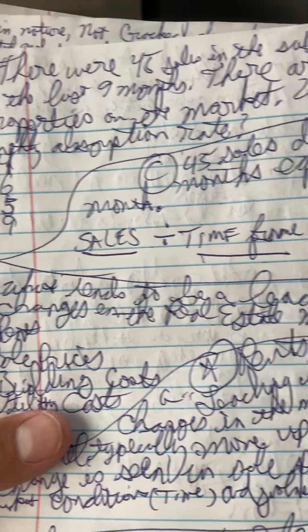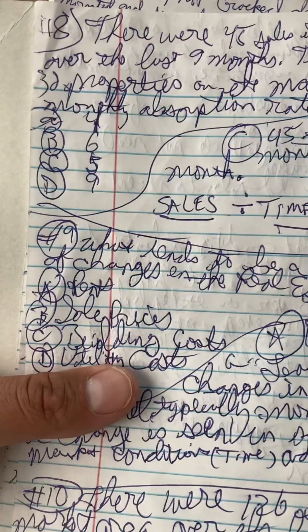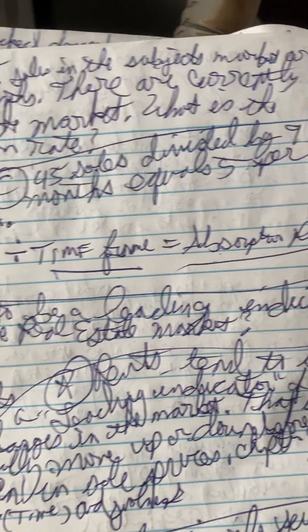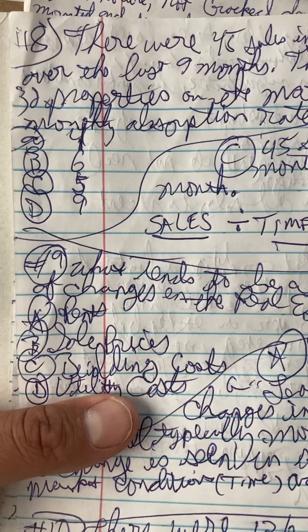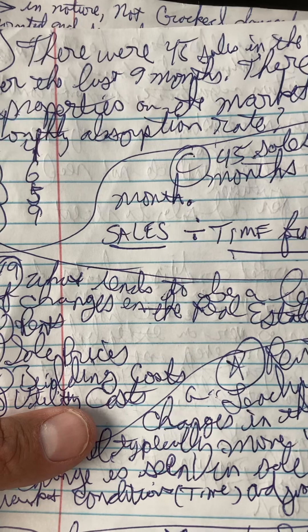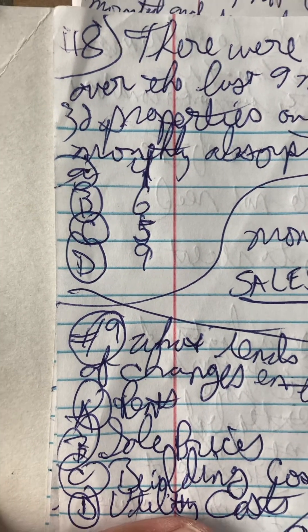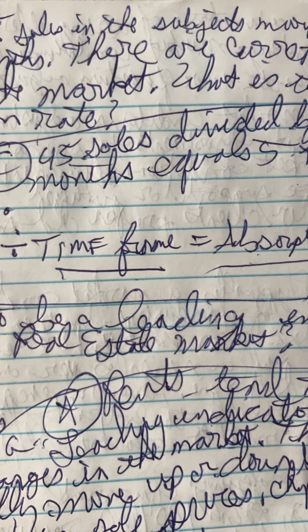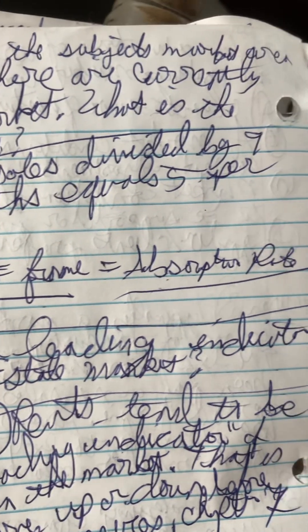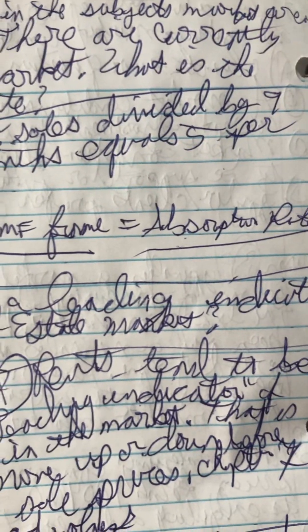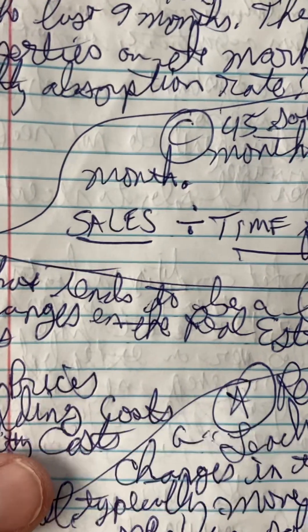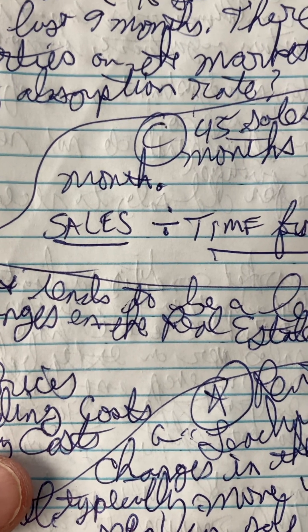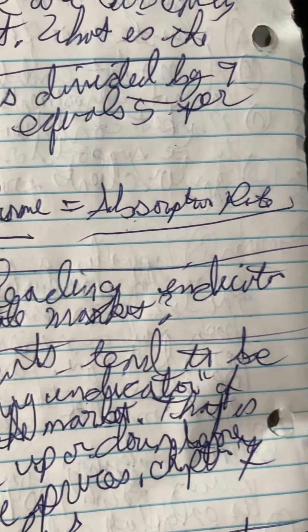Number eight: there were 45 sales in the subject's market area over the last nine months. There are currently 32 properties on the market. What is the monthly absorption rate? A. 4, B. 6, C. 5, or D. 9? The answer is C. The formula: 45 sales divided by 9 months equals 5 per month. Remember the formula — sales divided by the time frame equals the absorption rate.